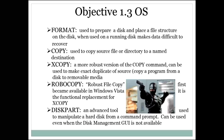From the command prompt you can use Format to prepare a disk and place a file structure on it. When used on a disk, it makes previous data difficult to recover. Then there's Copy — it copies the source file or directory to a named destination. XCopy was a newer, more robust version with more options, great for copying things like a CD to a USB flash drive. And then there's Robocopy — that stands for robust file copy, first available on Windows Vista, and it is a functional replacement for XCopy.